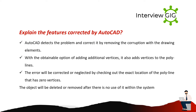Explain the features corrected by AutoCAD. AutoCAD detects problems and corrects them by removing corruption within the drawing elements. With the option of adding additional vertices, it also adds vertices to polylines. Errors will be corrected or flagged by checking the exact location of a polyline that has zero vertices. Objects will be deleted or removed after there is no further use of them within the system.